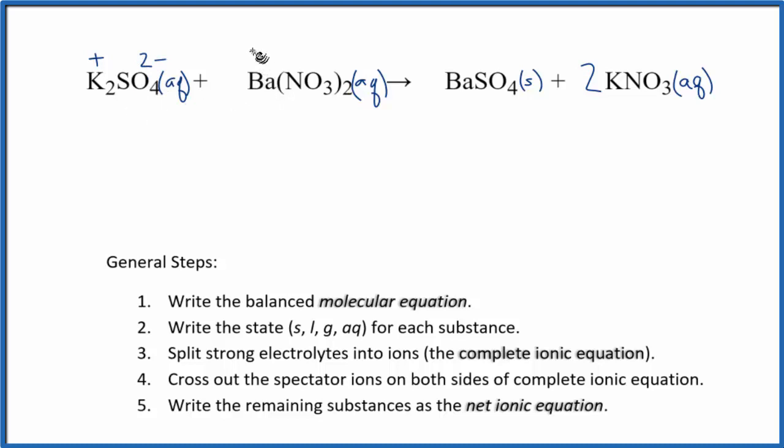Barium, group two, that's going to have a two plus ionic charge, and then the nitrate, that's one minus. Nitrate's another really good one to memorize. All right, so we have those.